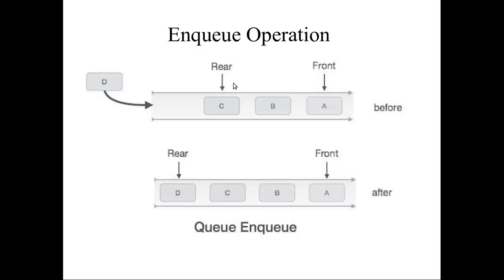So how do you do the NQ operation? You can use the data. If you type in the array, you should name your DQ. First in and first out. C is 0 and A is 0. We will set D in the rear end — you can insert D in the rear end.